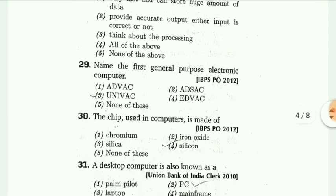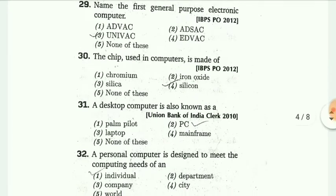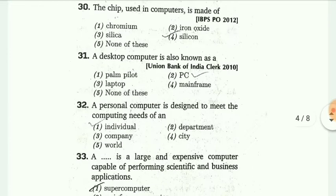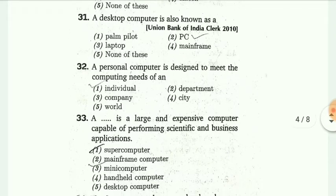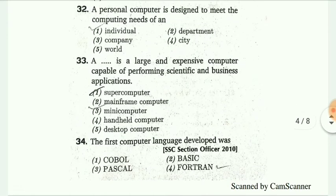Name the first general purpose electronic computer. The answer is UNIVAC. Next, the CPU chip in computer is made up of silicon. Next, the desktop computer is designed to meet the computing need of an individual.